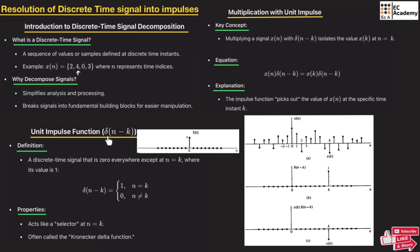If we consider delta(n − k), this is a time-shift operation. The delta function is shifted towards the right side by k divisions — the minus sign represents shifting towards the right. If we had a plus sign, we would shift towards the left. Shifting right by k divisions gives us the signal delta(n − k) as shown here.